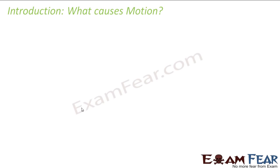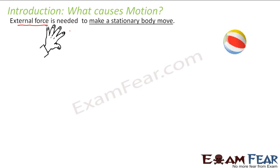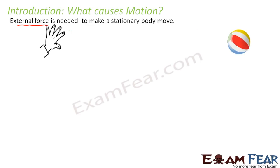So now in this lesson we want to know what causes motion — why does motion take place at all? The cause of motion is an external force. For example, do you think a ball ever moves on its own? Normally, a ball kept on a table will never move on its own; it will be at rest. It will move only when you apply some force on it. So external force is needed to make a stationary body move — a body at rest will be in motion only when an external force is applied.